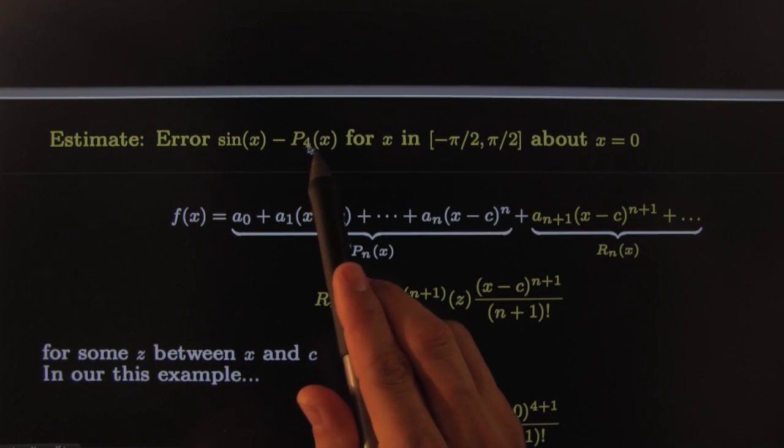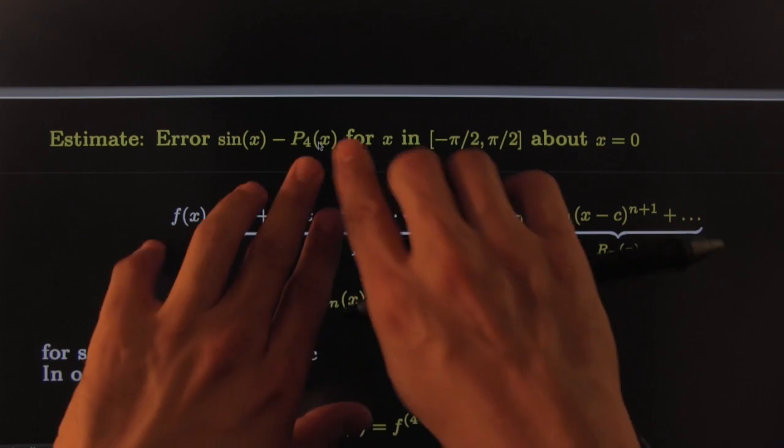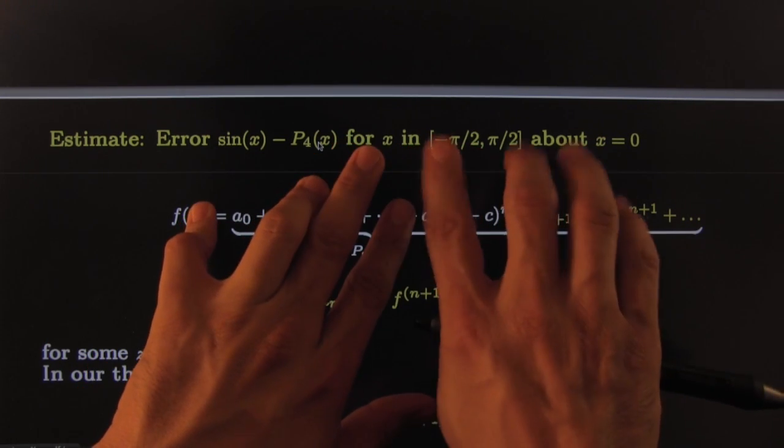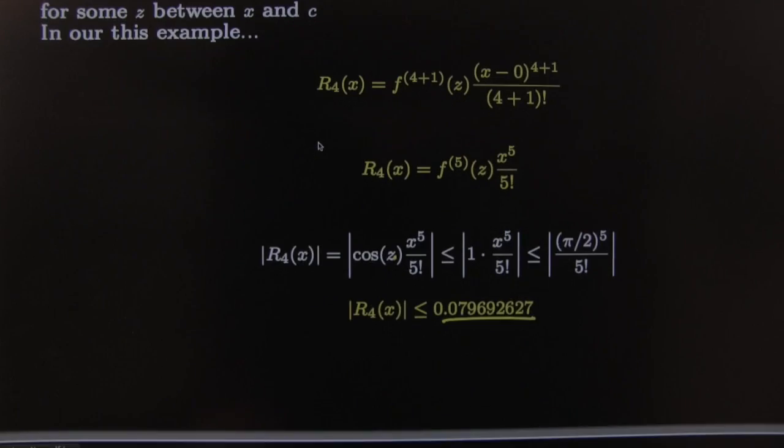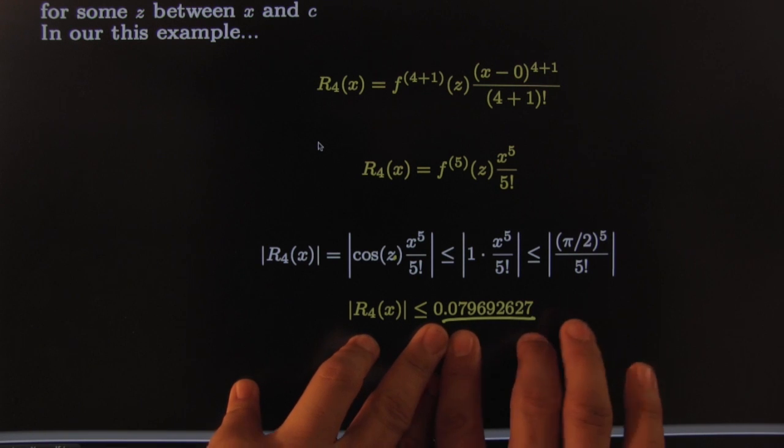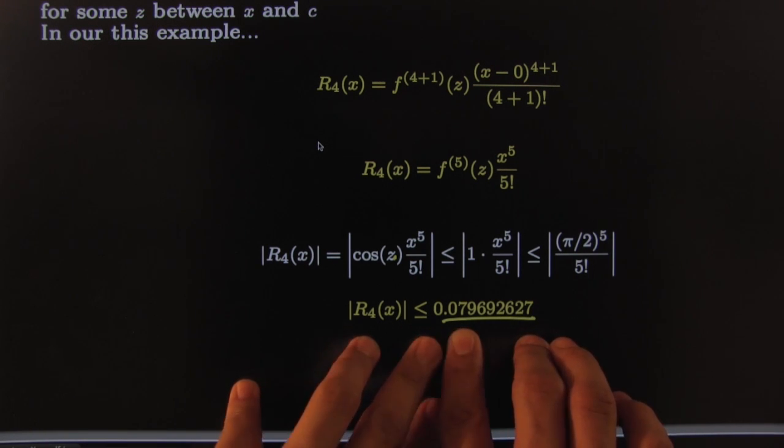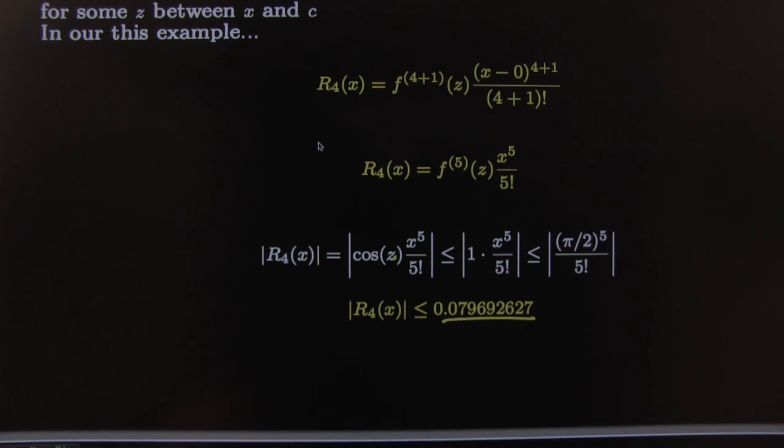Okay, so that leaves us with the conclusion of the question. How bad is the error if we use the fourth degree polynomial approximation and we stick the x's within this boundary? And we concluded that the error can be no worse than 0.079 blah blah blah. That's it. I showed you how to find the error. Okay come back, let's do another example.